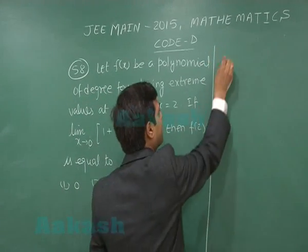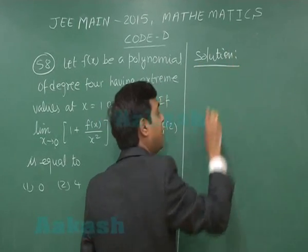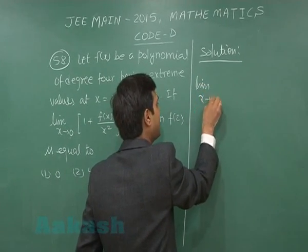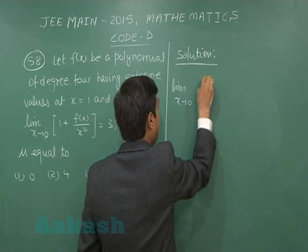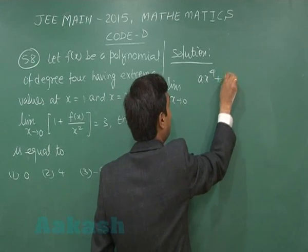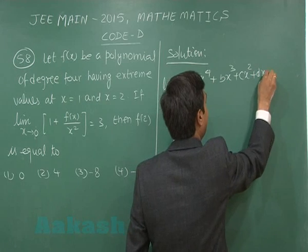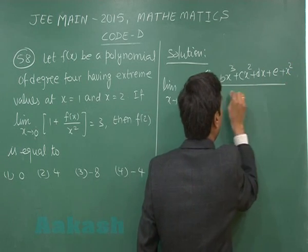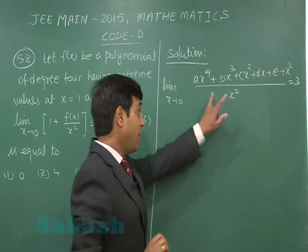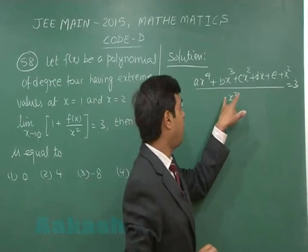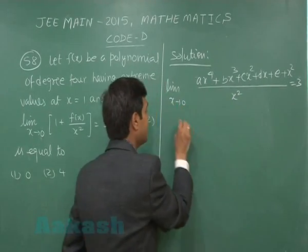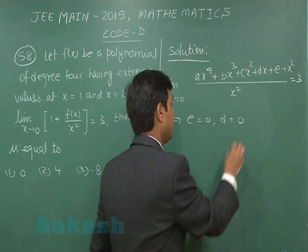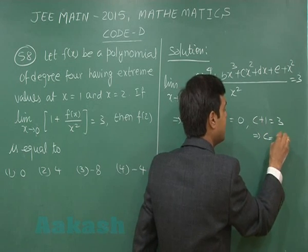Let us consider f(x) as a fourth degree polynomial: ax⁴ + bx³ + cx² + dx + e. Writing the limit as x approaches 0 of (ax⁴ + bx³ + cx² + dx + e) divided by x², plus 1, equals 3. Since the denominator has degree 2 in x, all coefficients of terms with degree less than 2 must be 0, so e = 0, d = 0, and the coefficient of x² gives c + 1 = 3, meaning c = 2.